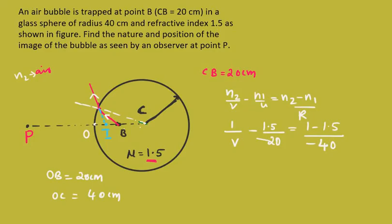We can simplify this. 1/V + 1.5/20 will equal -0.5/40. Once you simplify this, you will get V equals -16 centimeters. This is the final answer.